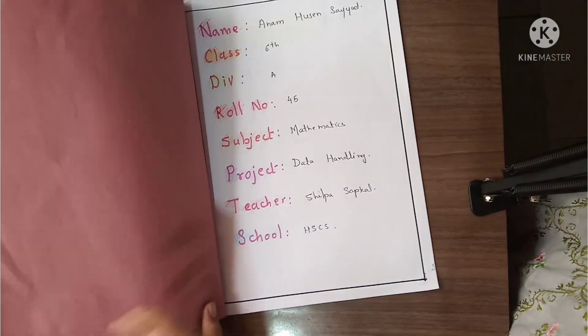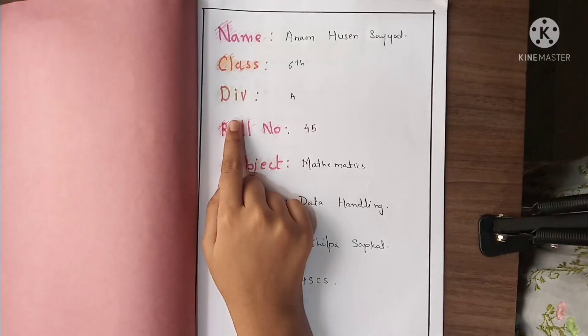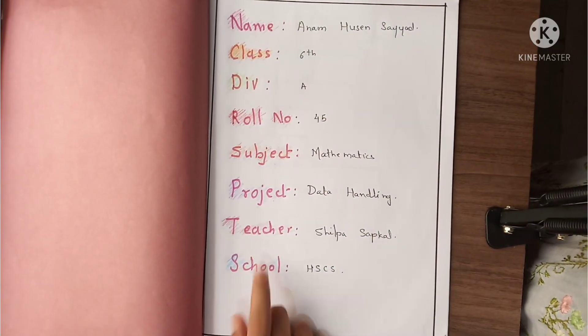Now let's see what's inside. Here is the name, class, division, role number, subject, project, teacher and school.